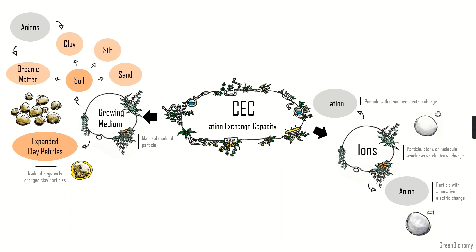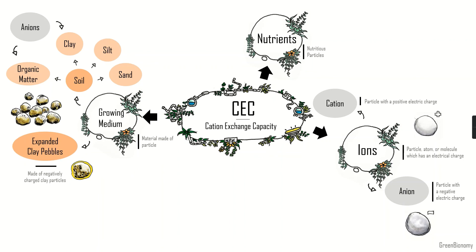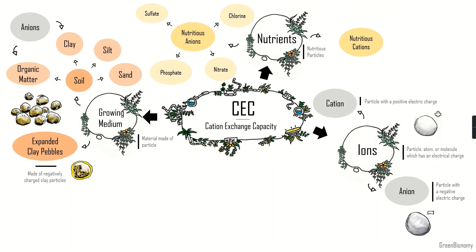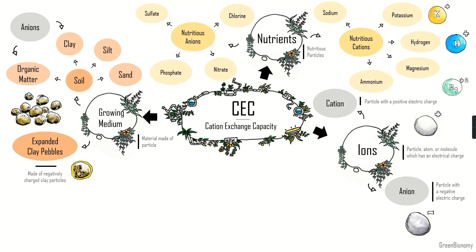To summarize so far: we have cations and anions, and we have the growing medium made of particles that can have an electric charge. Now the nutrients — nutritious particles — can also have a charge. Nutritious anions, nutrients with a negative charge, include chlorine, sulfate, phosphate, and nitrate. The positive ones, nutritious cations, include sodium, potassium, hydrogen, magnesium, ammonium, and calcium.